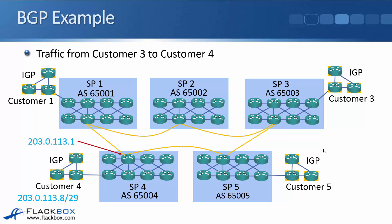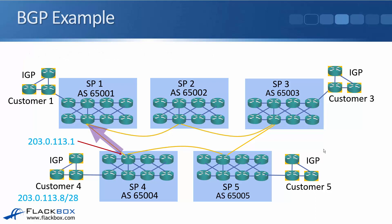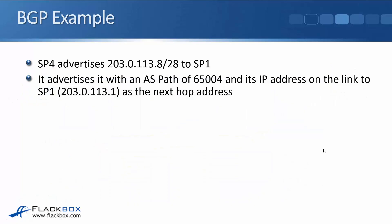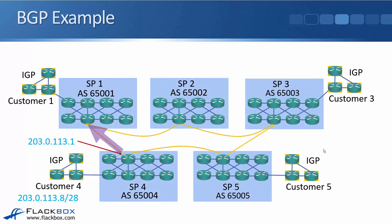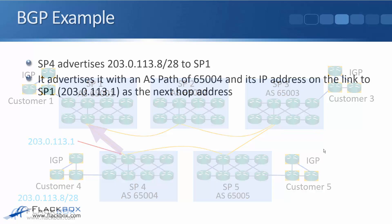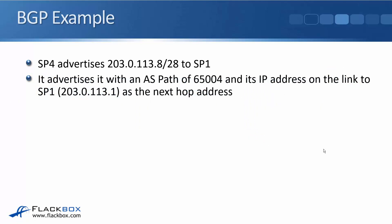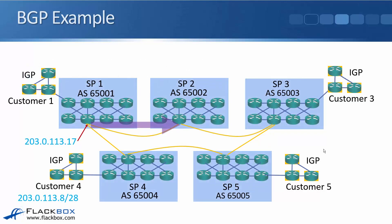We need to advertise that route out to all other service providers including SP3, where customer 3 is located. SP4 is connected to SP1 using IP address 203.0.113.1 on that link. SP4 advertises the route 203.0.113.8/29 to SP1 using BGP with an AS path of 65004, saying 'you can reach that network through me' with next hop 203.0.113.1.